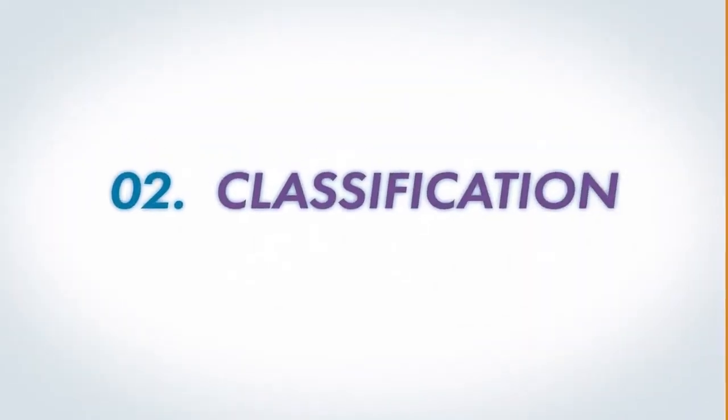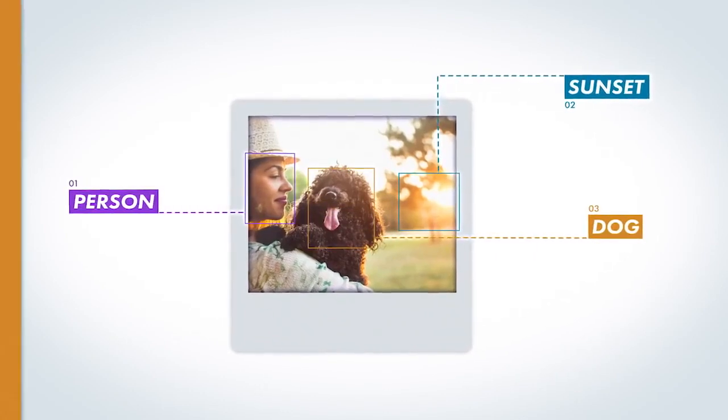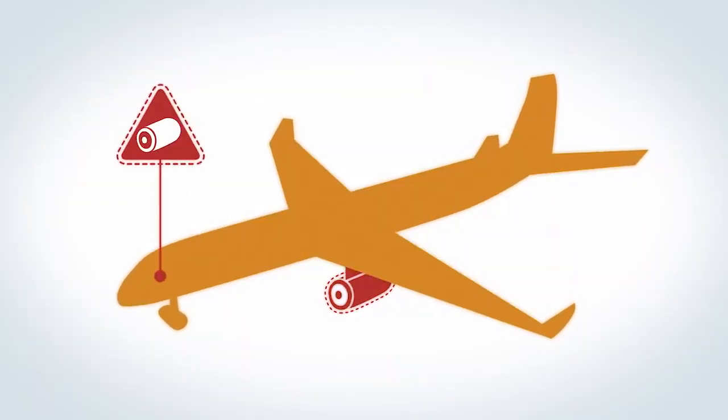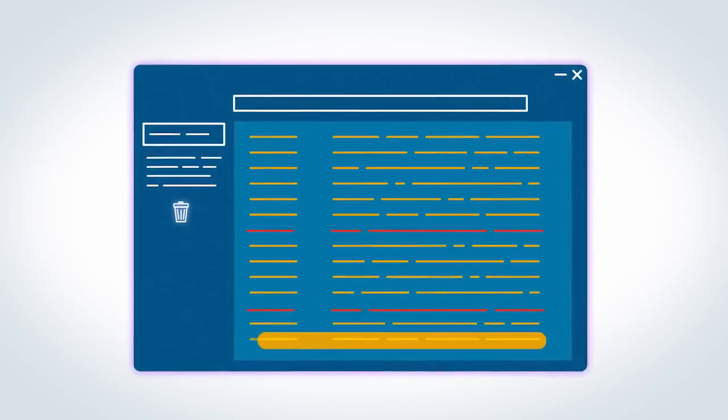This is classification, and you use it for things like object detection in images, predictive maintenance, and spam detection.